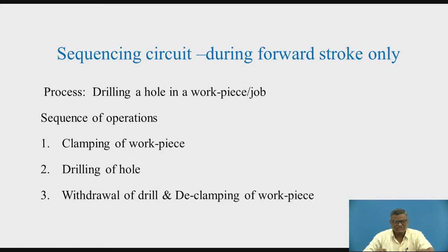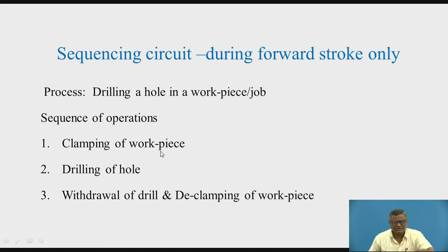We will firstly deal with the sequencing circuit during forward stroke only. Here we make use of linear actuators — cylinders and pistons — with forward stroke and backward stroke. During forward stroke only, we have the sequencing. You can observe that the third operation has been combined with the fourth: withdrawal of the drill and declamping of the workpiece. These are combined, so the forward strokes are completed one after another, and then the backward stroke takes place for both actuators at the same time.